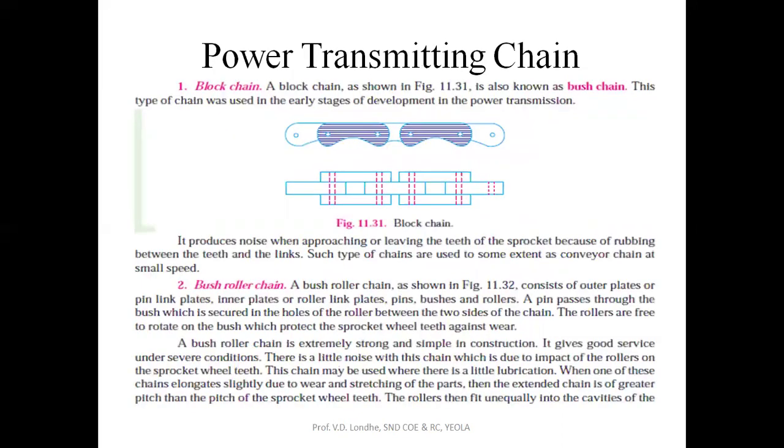Next is power transmitting chain, categorized into block chain and bush roller chain. Block chain is also known as bush chain and was used in the early stages of power transmission development. It produces noise when approaching or leaving the teeth of the sprocket because of rubbing action and maximum friction between teeth and links. Such chains are used to some extent on conveyors, not for power transmission.